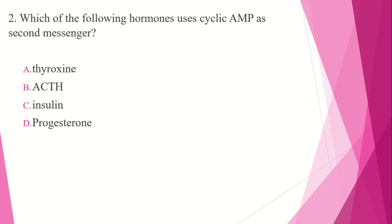Thyroxine is an amino acid hormone that acts through a nuclear receptor rather than a second messenger. Insulin uses tyrosine kinase as its second messenger. Progesterone is a lipid-derived steroid hormone. All steroid hormones can cross the lipid cell membrane and act directly in the nucleus through mRNA regulation — they do not use a second messenger.